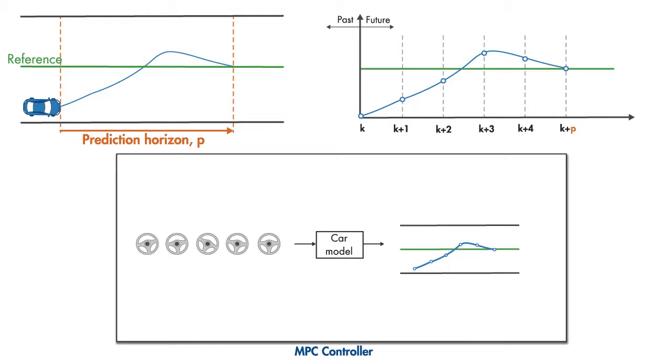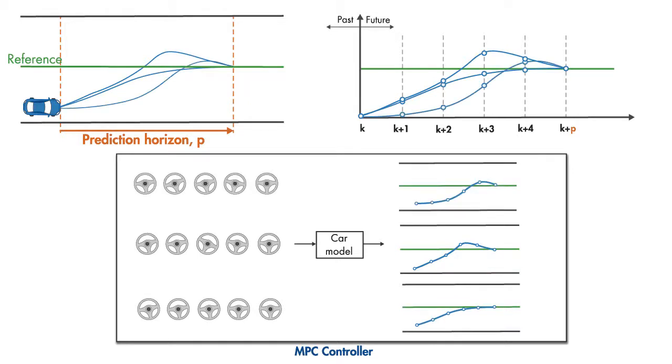The MPC controller needs to find the best predicted path that is the closest to the reference. So it simulates multiple future scenarios like this. However, it doesn't do these simulations in a random order.